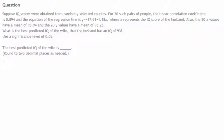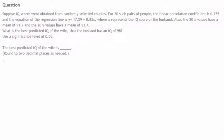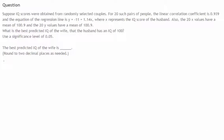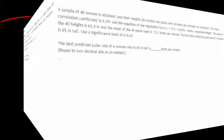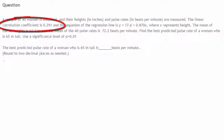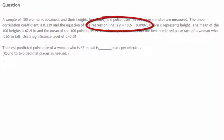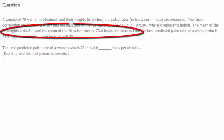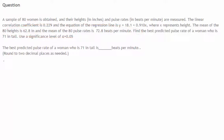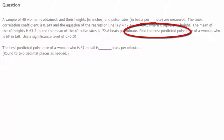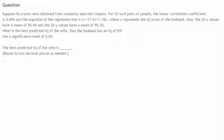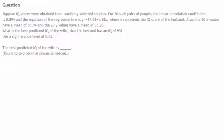In the questions that you see represented here, there is a common thread. You'll notice that in all of these questions, there is no data set. We're given the linear correlation coefficient, the equation of the regression line, and the mean of the x and y values. Then we're asked for the best predicted value for a given x value. The question becomes: is it better to use the regression line, or is there some better way to find the predicted value?